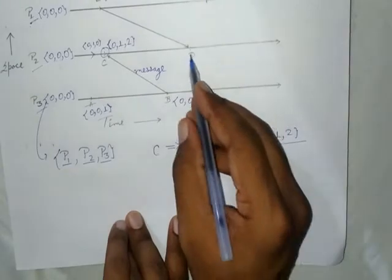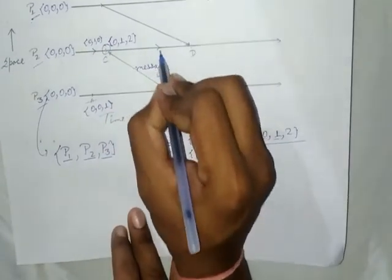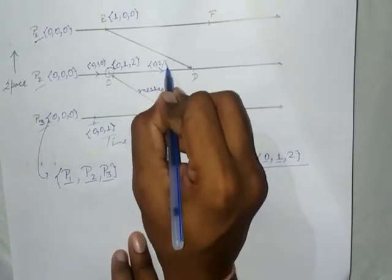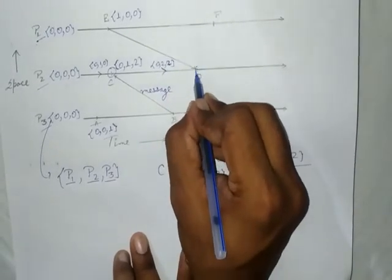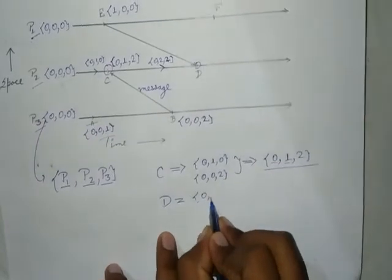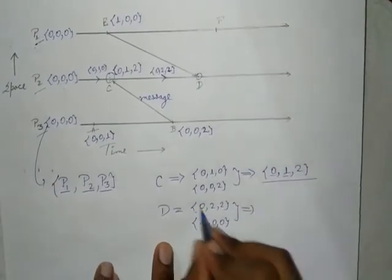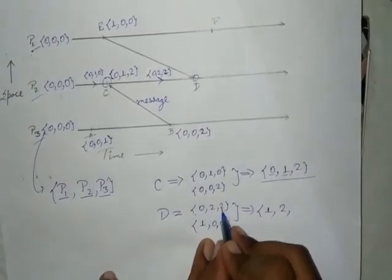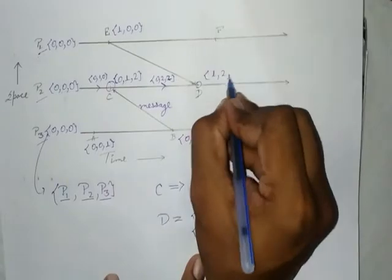Similarly for event D: there is an incoming vector from event E. The counter is incremented, giving [0, 2, 2] as one incoming vector, and [1, 0, 0] as another incoming vector to be merged at event D. We find the coordinate-wise maximum: maximum of 0 and 1 is 1, maximum of 2 and 0 is 2, and maximum of 2 and 0 is 2. So the vector for event D is [1, 2, 2].